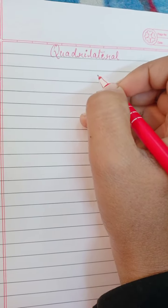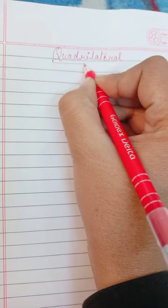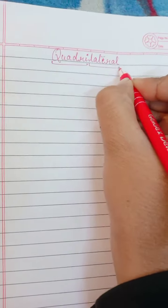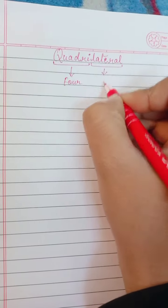What is a quadrilateral? A quadrilateral is basically made up of two words, quadri and lateral. See, quadri means four and lateral means sides.